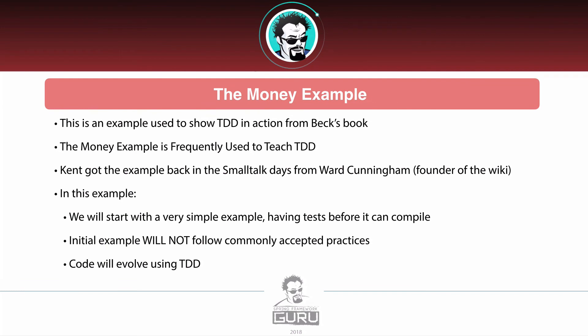The reason I've been talking about Kent and the book: we are going to use the money example, which is used in the first section of Kent's book Test-Driven Development by Example. The money example has been used numerous times to help teach and demonstrate how test-driven development works. It actually comes from Kent's Smalltalk days, and he got the example from Ward Cunningham, who is interestingly enough the founder of the wiki. We are going to start with an example that won't even compile initially and evolve it — not following commonly accepted practices at first, but evolving our code to quality using a test-driven approach.